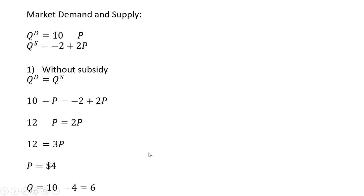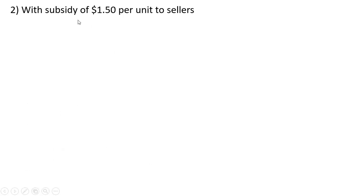Let's move on to the subsidy part. We're going to have a subsidy here of $1.50 per unit to sellers. So every time the seller produces and sells a good, that seller will get $1.50 from the government.